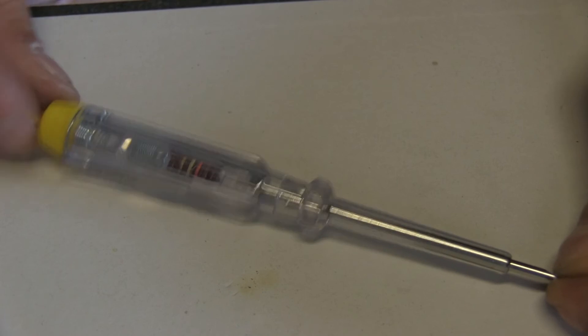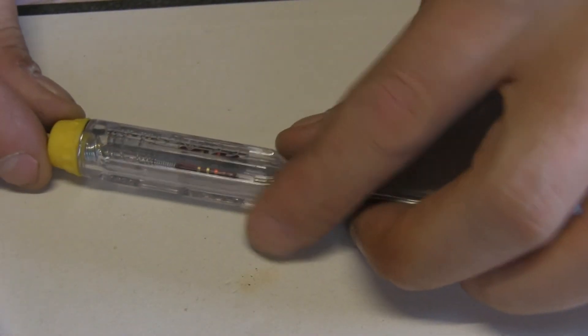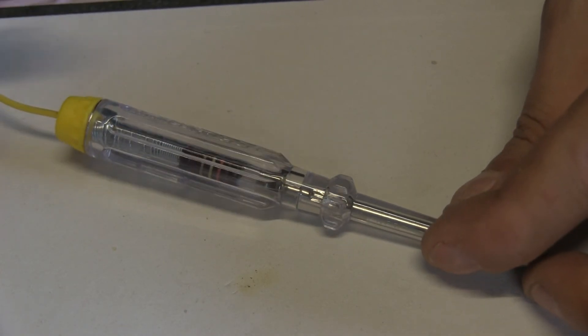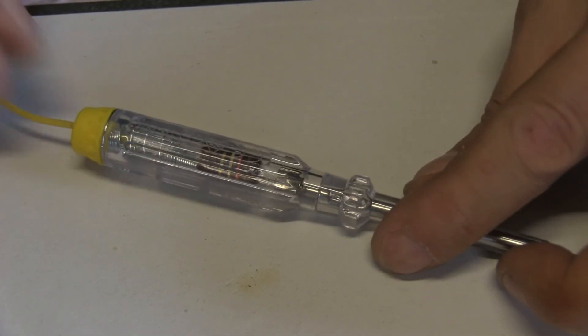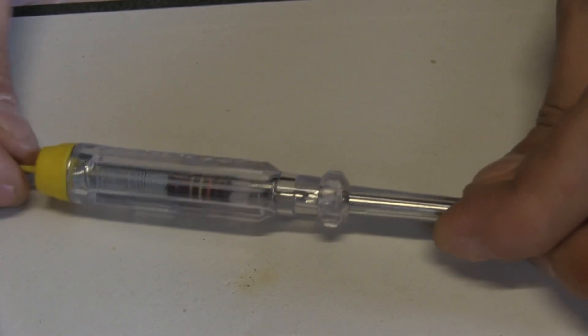And there we are, I put a dab of superglue just to make sure the cap will not fly off. It was difficult to remove, and the superglue was not even needed because it was very hard to put back together, so I guess it's going to be just fine.